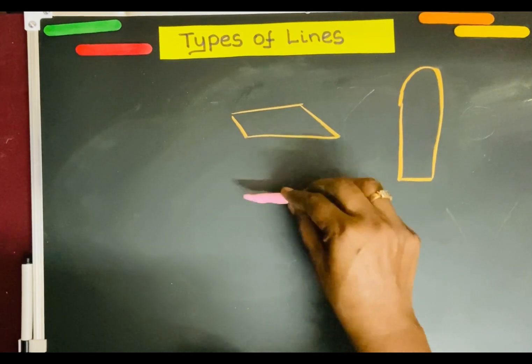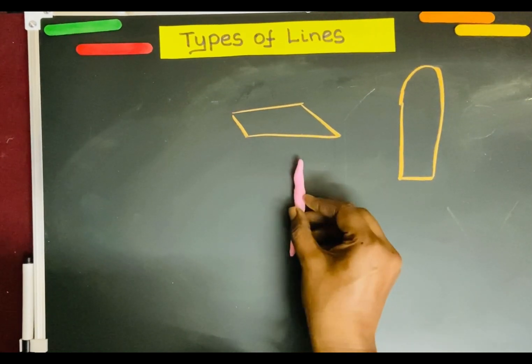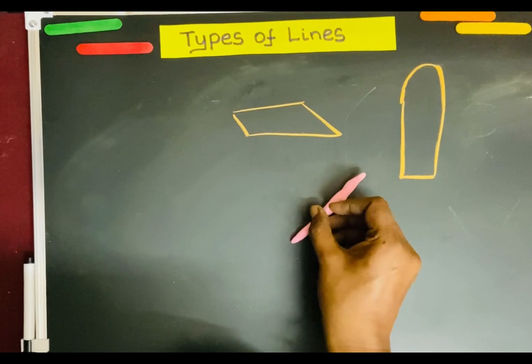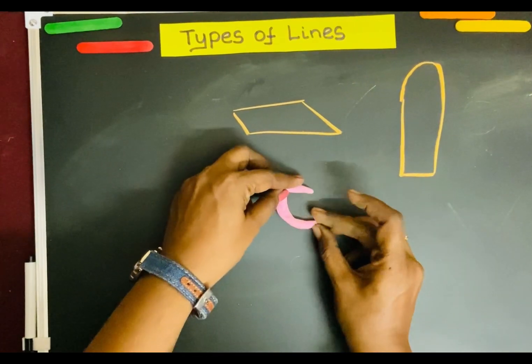Let's learn the types of lines again. Horizontal line, vertical line, slanting line, and curved line.